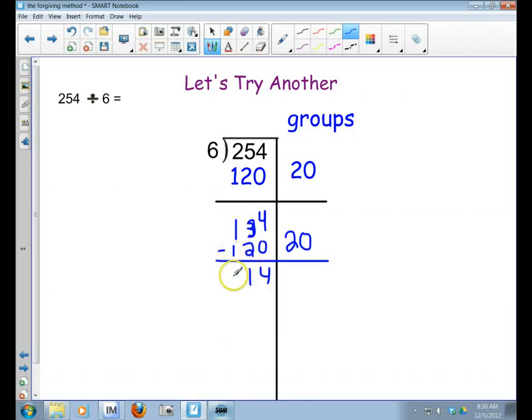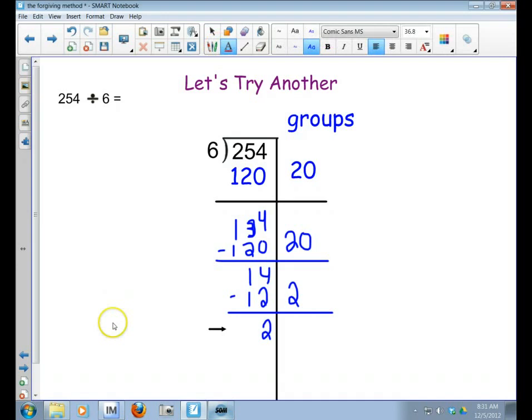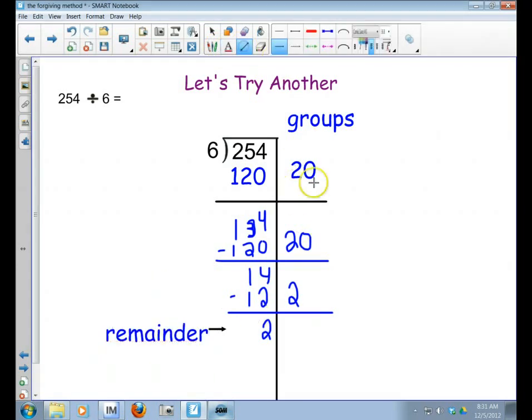So I've got 4 take away 0 is 4. 3 take away 2 is 1. 1 take away 1 is 0. All right, so now I'm trying to think 6 times what is going to get me close to 14 or exactly? Well, 6, 12, 18. So I can't get exactly 14, but I can get pretty darn close by doing 2 groups of 6, because 6 times 2 equals 12. So then I subtract. 4 take away 2 is 2. 1 take away 1 is 0. So this one, remember we said that this number right here, this is your remainder.